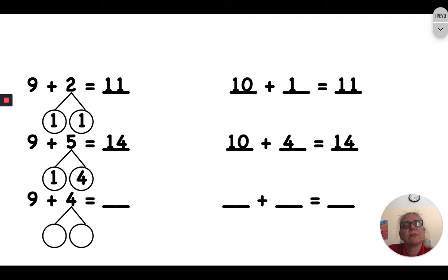Let's take a look at this last problem. Nine plus four. Well, let's break that four apart so we can give some to the nine. There we go. The nine is going to take that one and make ten. How many were left over? That's right. Three. Ten plus three. Ten plus three is thirteen. Nine plus four is thirteen.